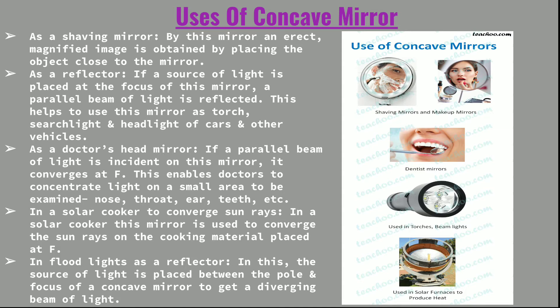Now let's look at the uses of the concave mirror. Concave mirrors are used as a shaving mirror, as a reflector, as a doctor's head mirror, in a solar cooker, and in floodlights. As a shaving mirror, it forms an erect and magnified image when the object is placed close to the mirror — that is, between the pole and the focus — giving a virtual, erect, and magnified image.